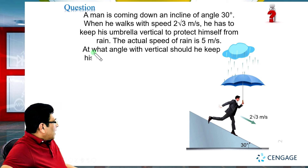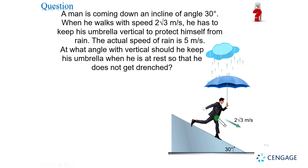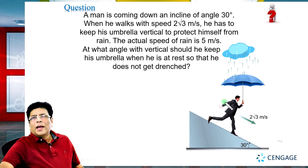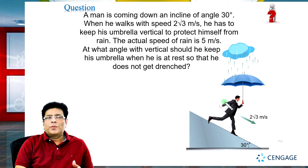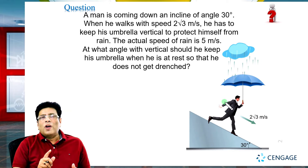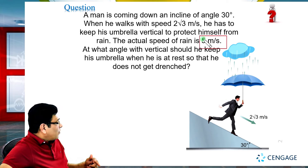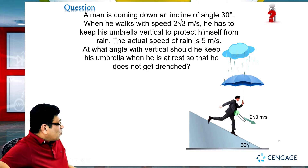The next part of the question asks: at what angle with the vertical should he keep his umbrella when he is at rest, so that he does not get drenched? That means, when the man is at rest on the inclined plane, in which direction should he keep his umbrella. If the man is at rest, the velocity of the man with respect to the ground is zero, so the direction and magnitude of the rain will be the actual velocity of the rain, with magnitude 5 meters per second. That means in this question we need to calculate the actual direction of the rain.